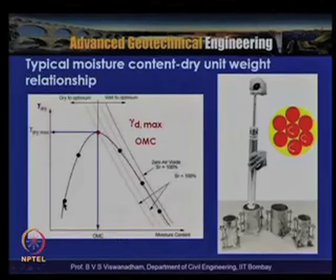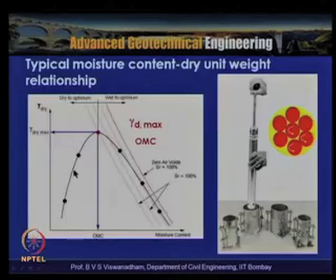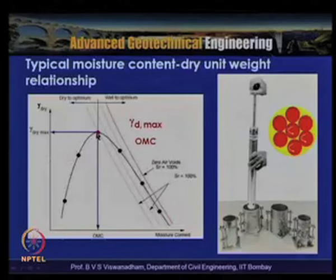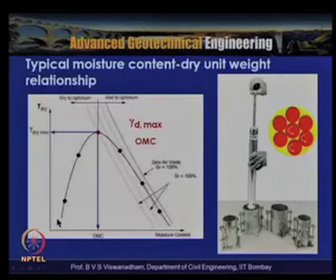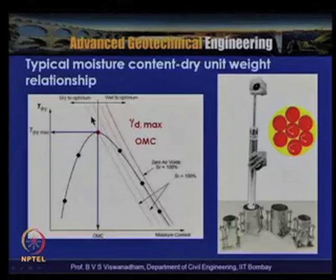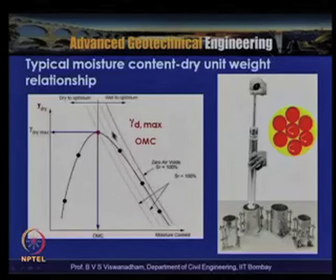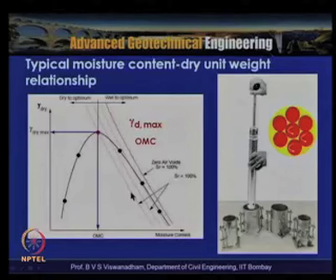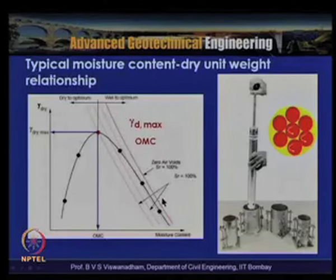The zero air voids (ZAV) line, equivalent to the 100% saturation line, is a hypothetical upper bound. The descending limb on the wet side of optimum and the ZAV line can never coincide because complete expulsion of air is not possible; the soil always remains in a partially saturated state.